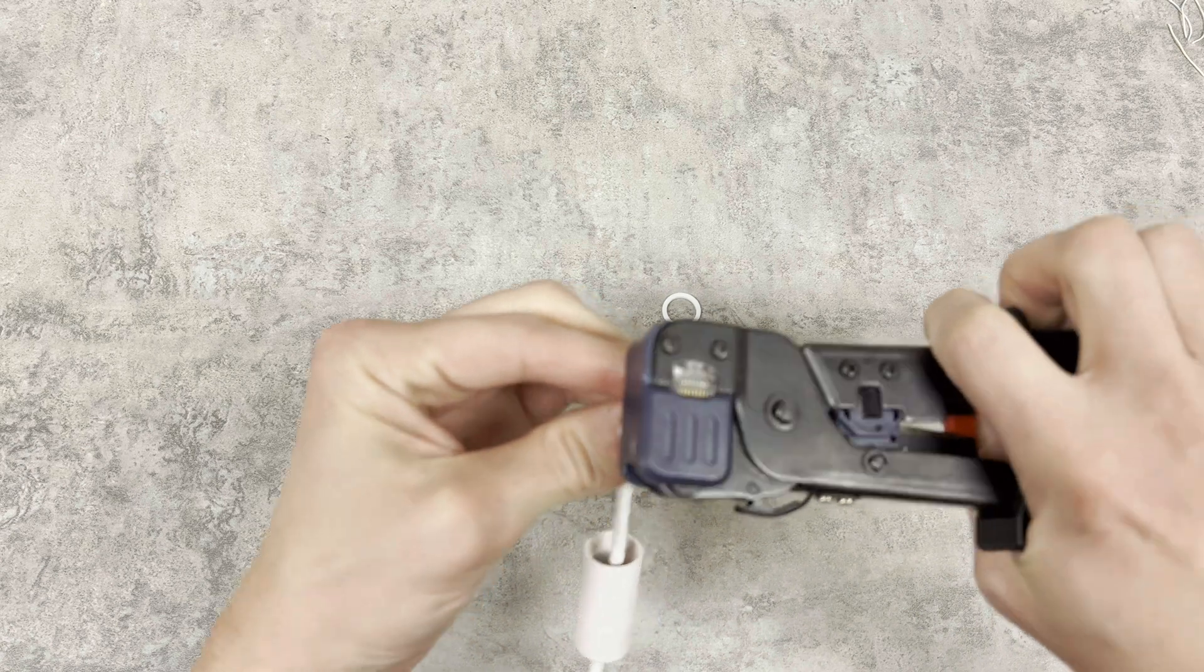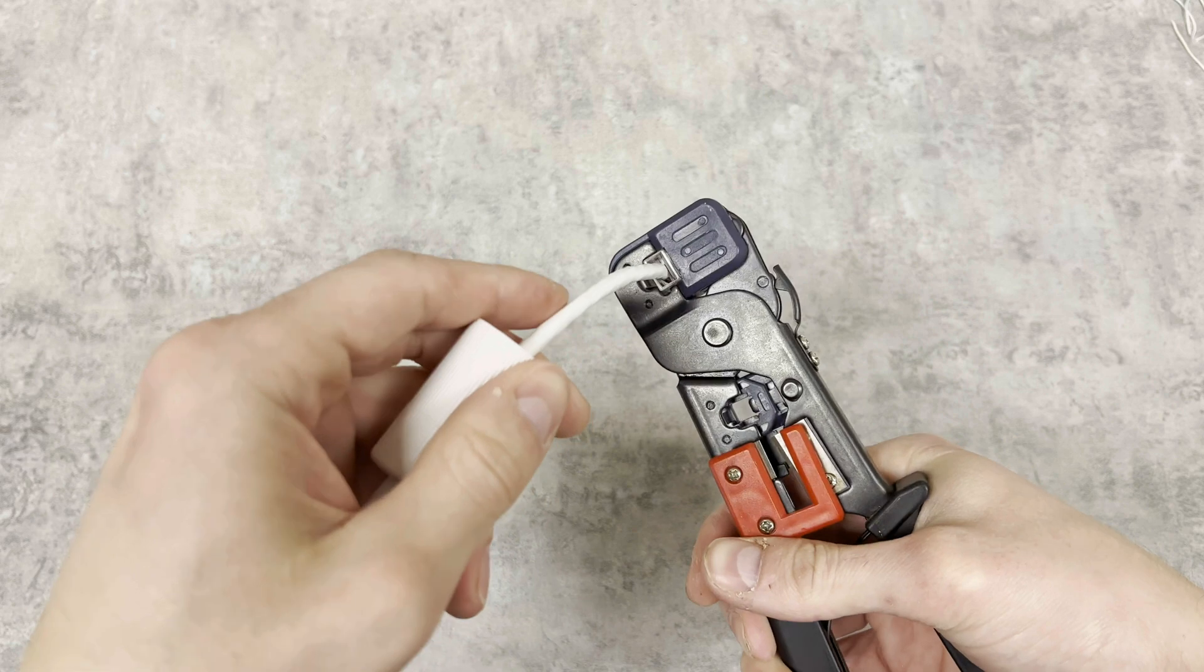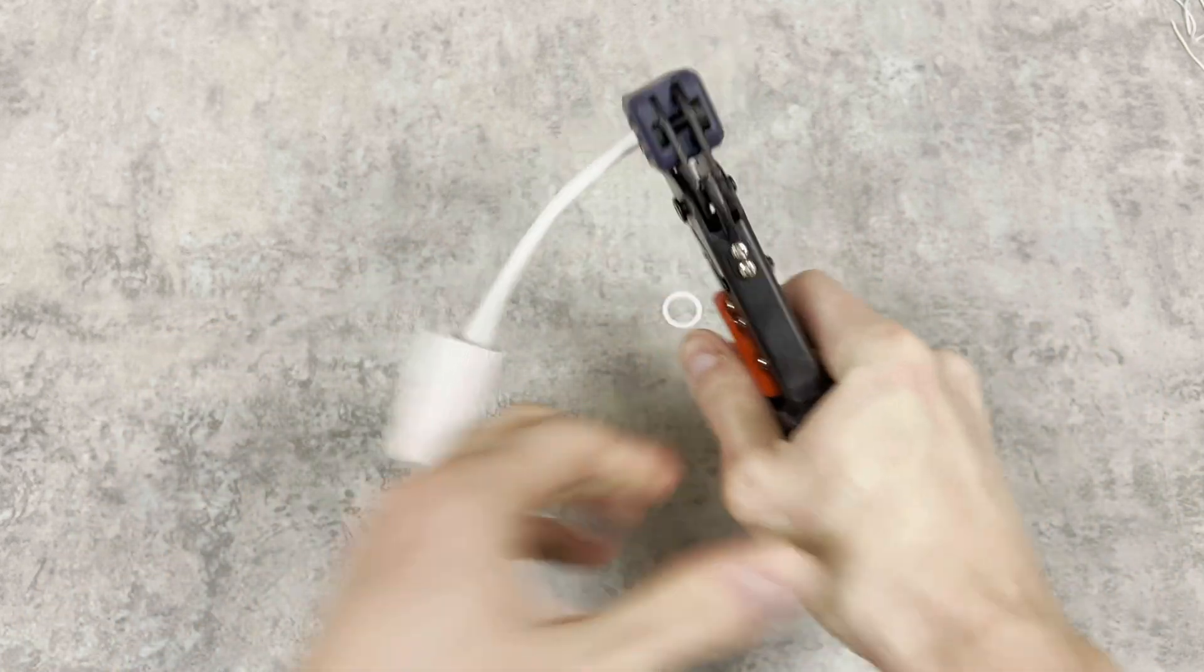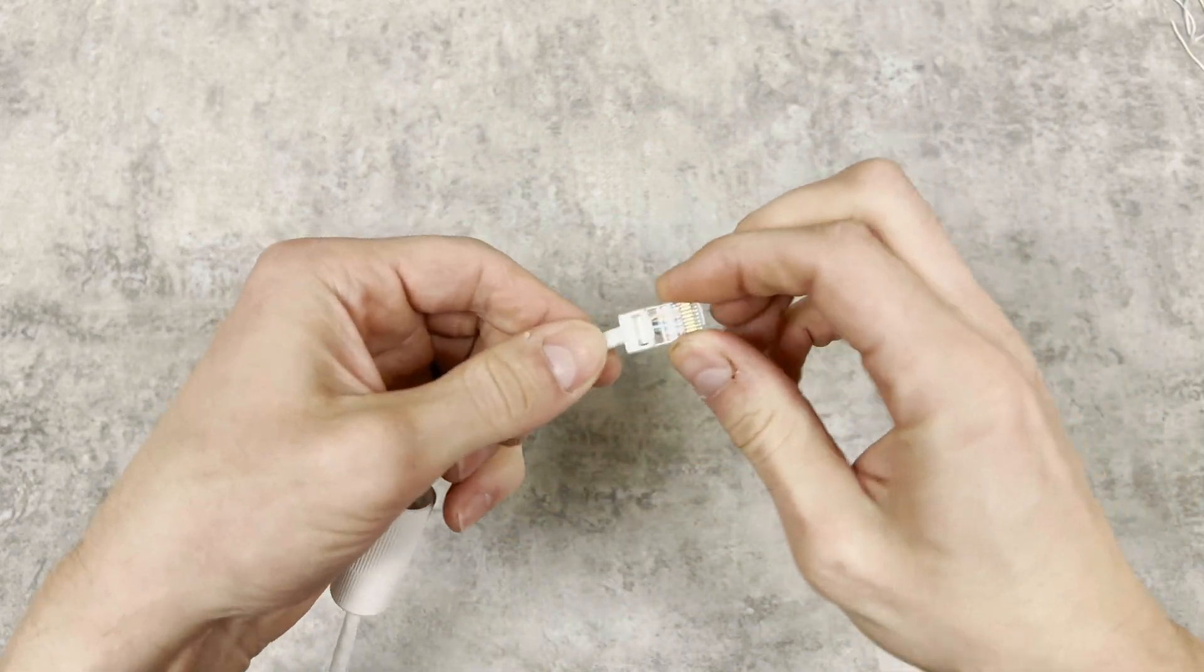I like to give it a quick inspection, making sure that all the ends are fully crimped down and seated where they belong, and make sure that we're following that T568B standard. Repeat these steps for the other side and you're all set.